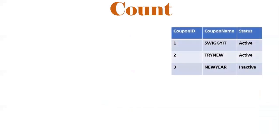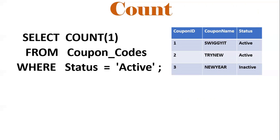The first concept is COUNT. COUNT is an aggregate function. Here we have a table called coupon_codes. We need to get the count of active coupons. The query is: SELECT COUNT(1) FROM coupon_codes WHERE status = 'active'. We will get two records from this query.